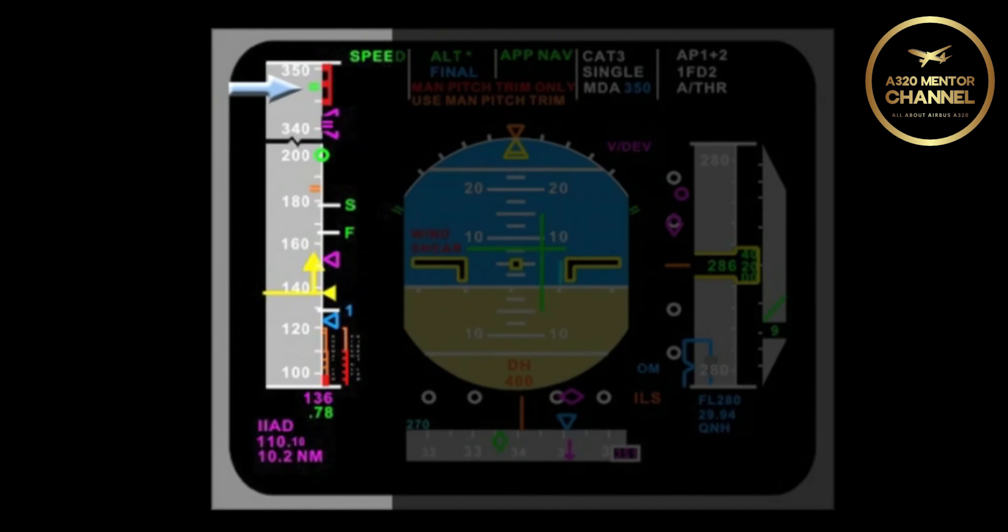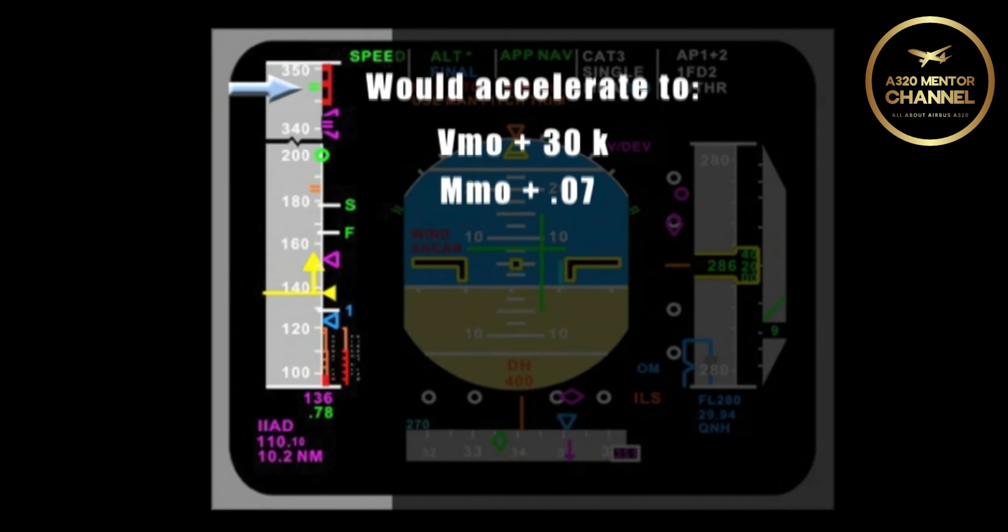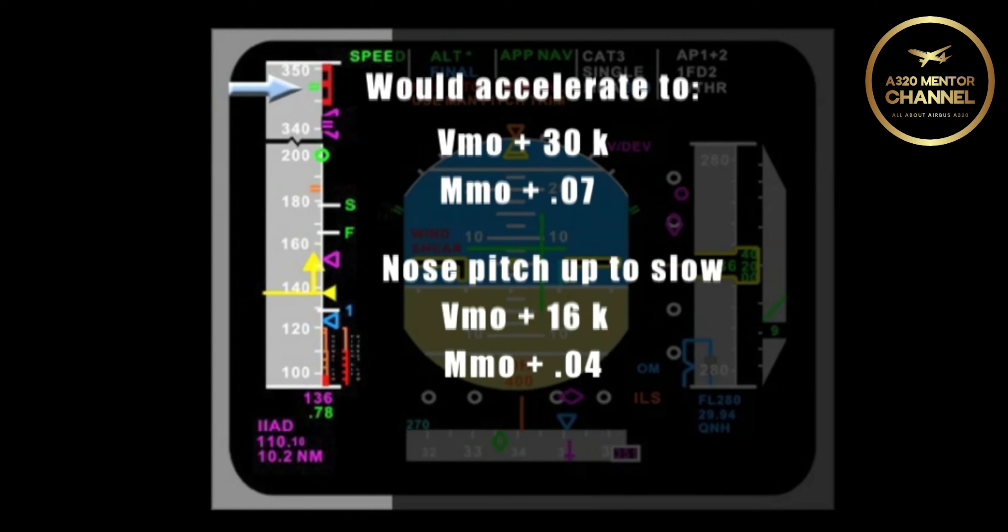If you continue to try and accelerate, what will happen? The aircraft would accelerate to VMO plus 30 or MMO plus 0.07. When it reached that speed, the nose would definitely come up and would decelerate to VMO plus 16 or MMO plus 0.04. Once we slowed below VMAX, the protection logic would be reset.